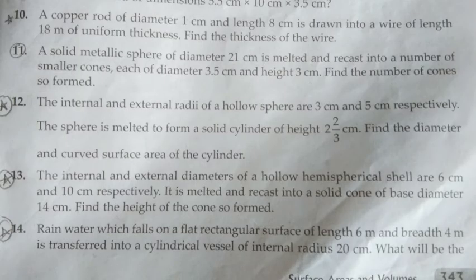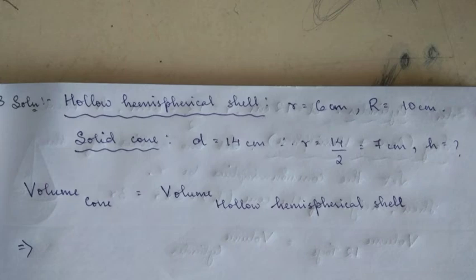Now we'll move on to question number 13. Here the internal and external diameters of a hollow hemispherical shell are given. So instead of spherical shell, now it's hemispherical shell. They're giving diameter instead of radius, so we need to find the radius. The hollow hemispherical shell has one internal radius and one external radius - big R and small r.